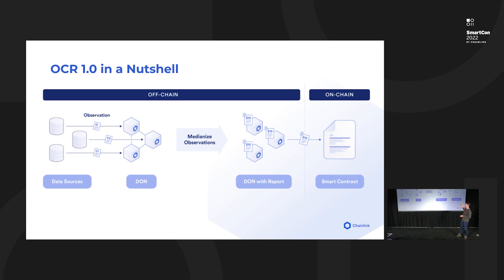That report is signed by a quorum of oracles and transmitted to the on-chain contract, which makes it available to customers like Synthetix. The contract validates the signatures on the report, giving us assurance that the DON indeed observed those prices. In terms of security, this is a strong system operating in a Byzantine fault tolerant setting — we can tolerate a subset of nodes exhibiting arbitrary faults, even if compromised by an adversary, and the overall system will still function correctly.